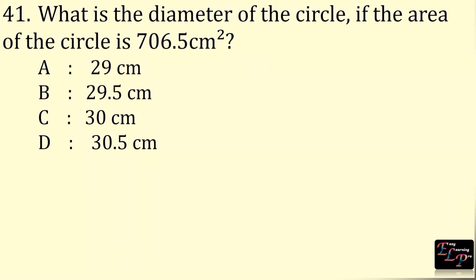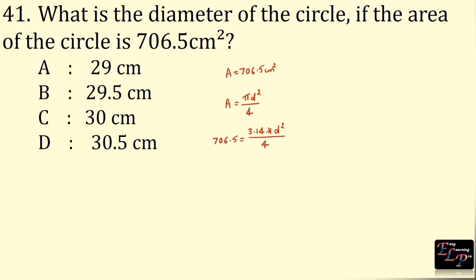What is the diameter of the semicircle if the area is 706.5 cm²? Area is 706.5 cm². Area of a semicircle is πd² ÷ 4: 706.5 = 3.14 × d² ÷ 4, so d² = 706.5 × 4 ÷ 3.14 = 900. Therefore d = √900 = 30 cm.